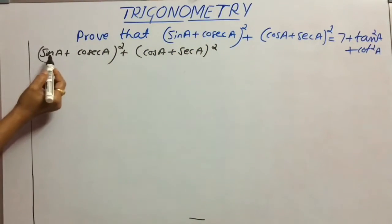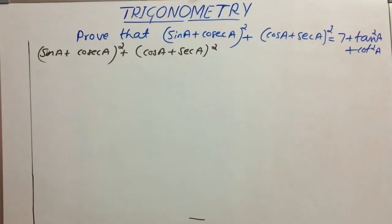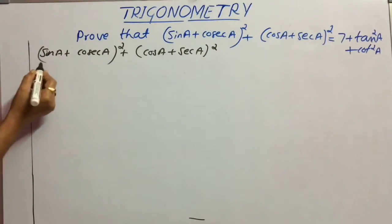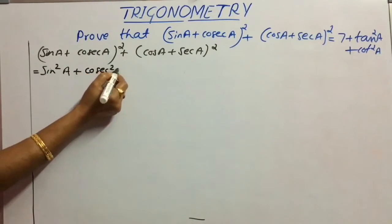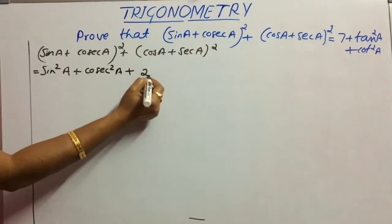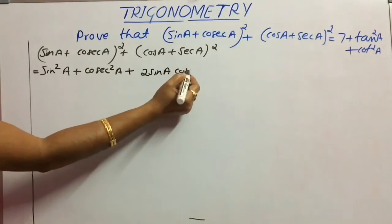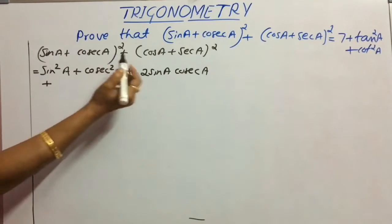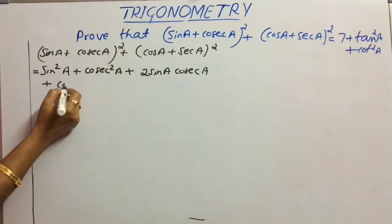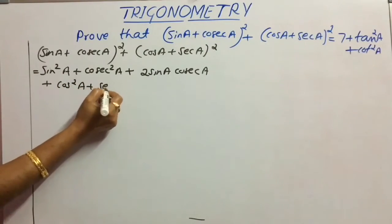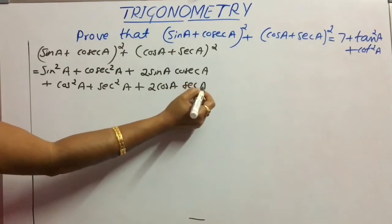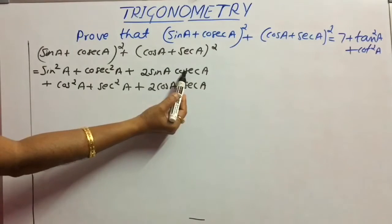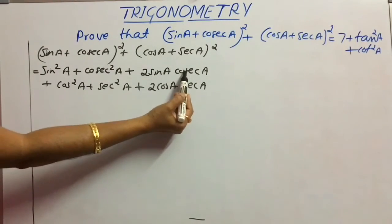We know the expansion (A + B)² = A² + B² + 2AB. Applying this gives sin²A + cosec²A + 2·sinA·cosecA, plus cos²A + sec²A + 2·cosA·secA. Since cosec A is the reciprocal of sin, those two terms multiply to 2, and similarly sec A is the reciprocal of cos, so those terms also give 2.